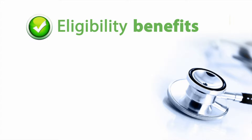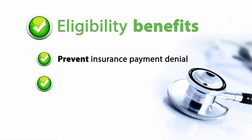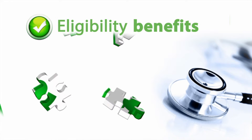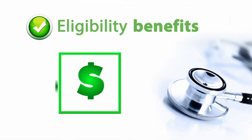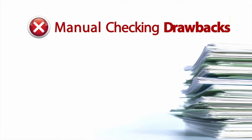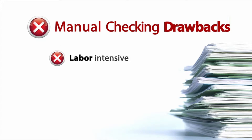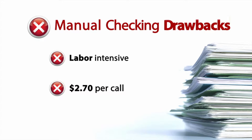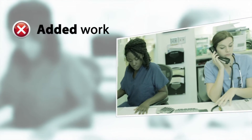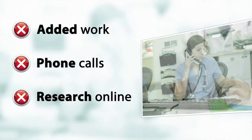Eligibility verification is one of the best ways to prevent insurance payment denial, avoid bad debt, and improve cash flow. Eligibility is also essential to help ensure collection of patient payments that are escalating due to high deductible health plans. Eligibility checking often doesn't happen because it's labor intensive. The average labor cost for each eligibility verification averages around $2.70 for a phone call.